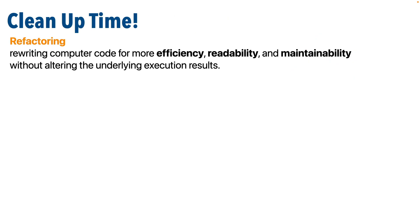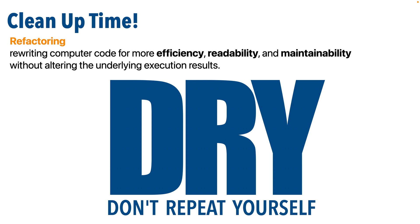Before we do that, let's introduce one more concept: no one writes pristine perfectly organized code the first time they sit down at their keyboard. Everyone goes back through their code and tweaks and reorganizes it — this process is typically referred to as refactoring. Refactoring is rewriting computer code for more efficiency, readability, and maintainability without altering the underlying results. You'll also hear folks in computer science refer to the concept of DRY — Don't Repeat Yourself — which is a good tenant to keep in mind when looking through your code.